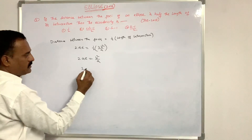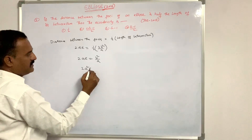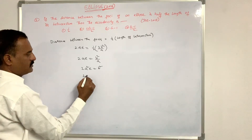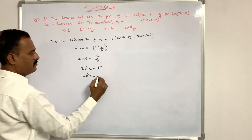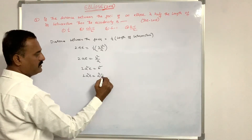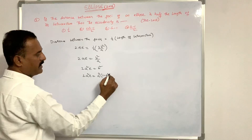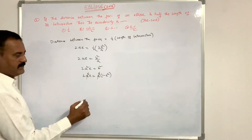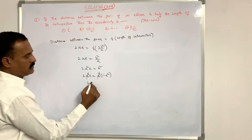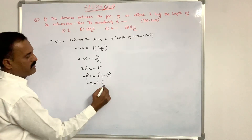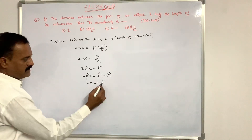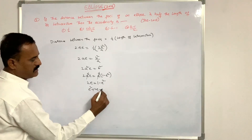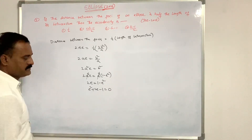Cross-multiplying: 2A²e = B². Since B² = A²(1 − e²) for a hyperbola, substituting and cancelling A²: 2e = 1 − e². Rearranging: e² + 2e − 1 = 0.